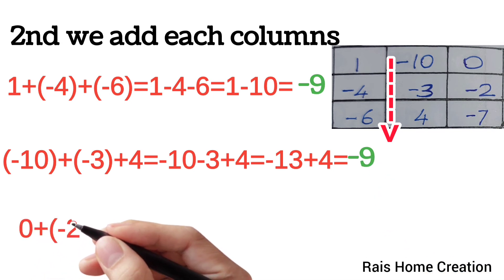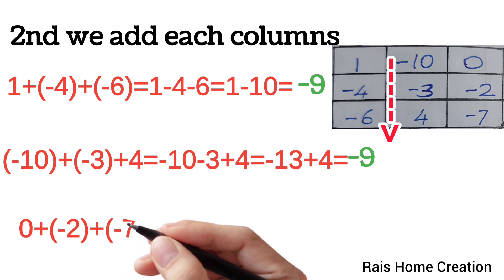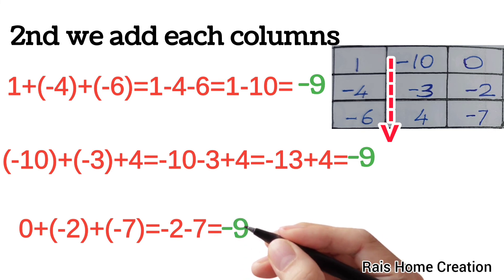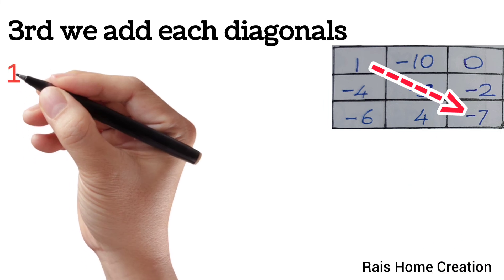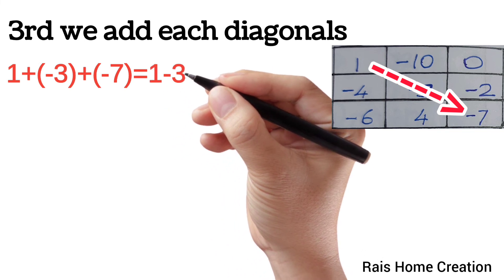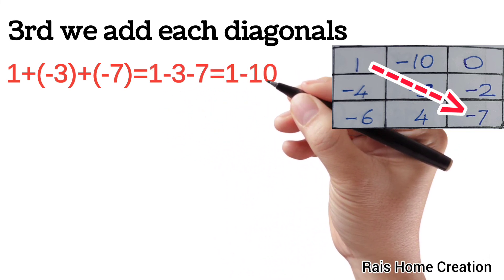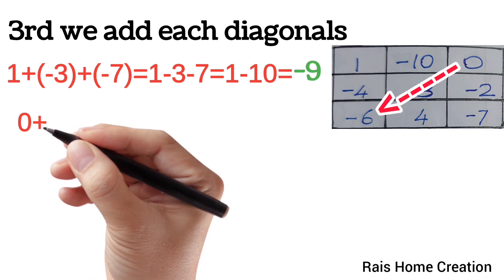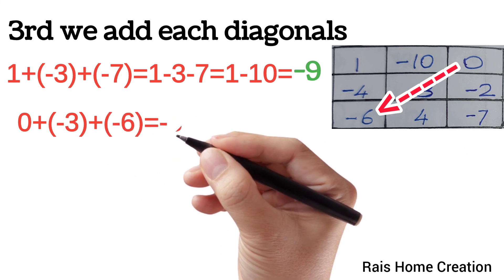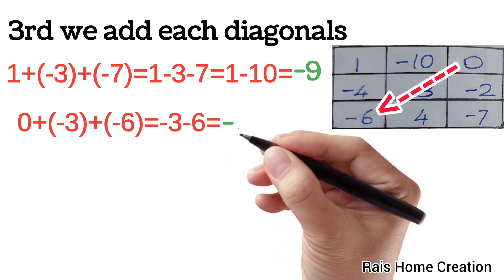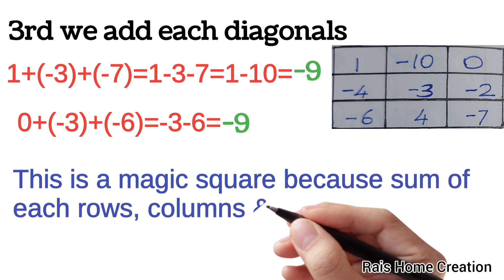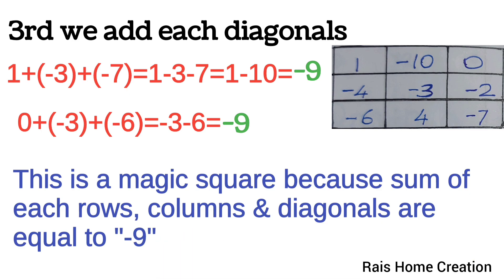0 plus minus 2 plus minus 7 equal to minus 2 minus 7 equal to minus 9. Next, we add each diagonal. 1 plus minus 3 plus minus 7 equal to 1 minus 3 minus 7 equal to 1 minus 10 equal to minus 9. 0 plus minus 3 plus minus 6 equal to minus 3 minus 6 equal to minus 9. This is a magic square because the sum of each row, column, and diagonal are equal to minus 9.